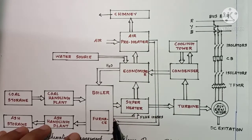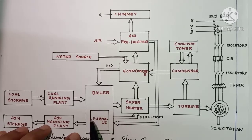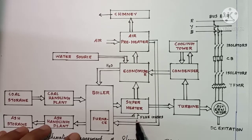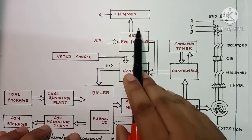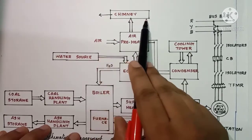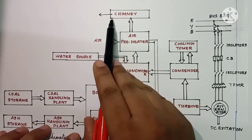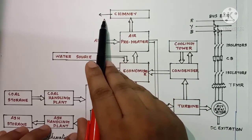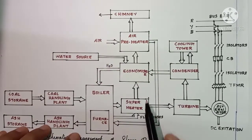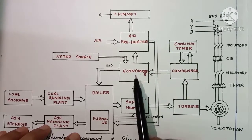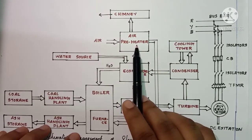The flue gases start their journey from the furnace or boiler after combustion, flowing through the superheater, then the economizer, then the air preheater, and finally into the chimney, where they are discharged into the atmosphere.